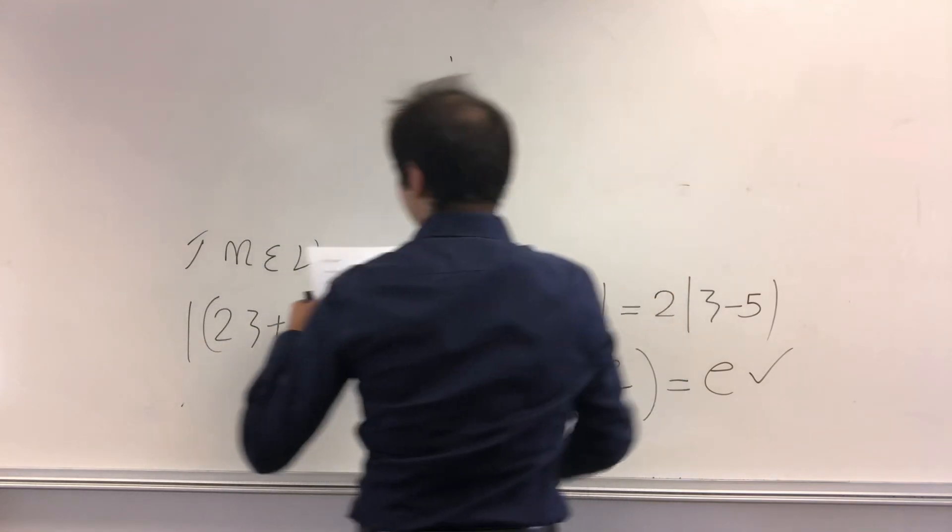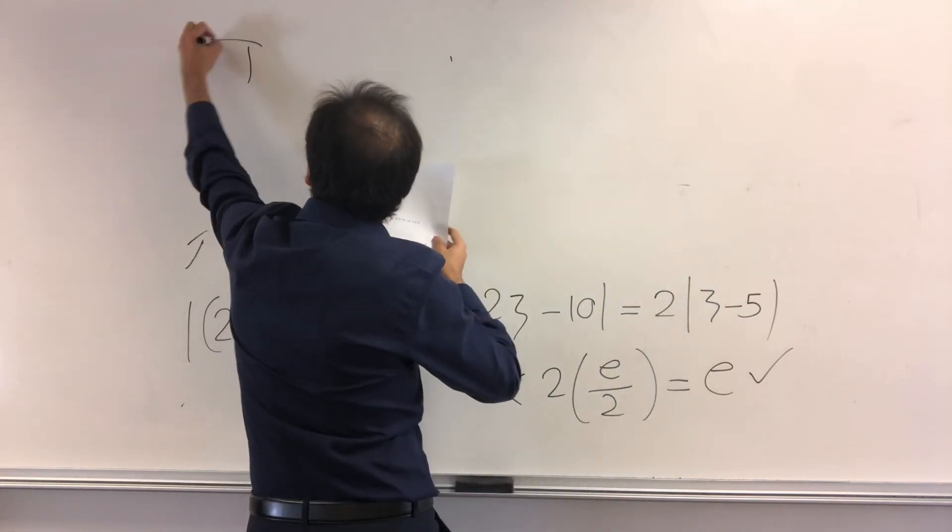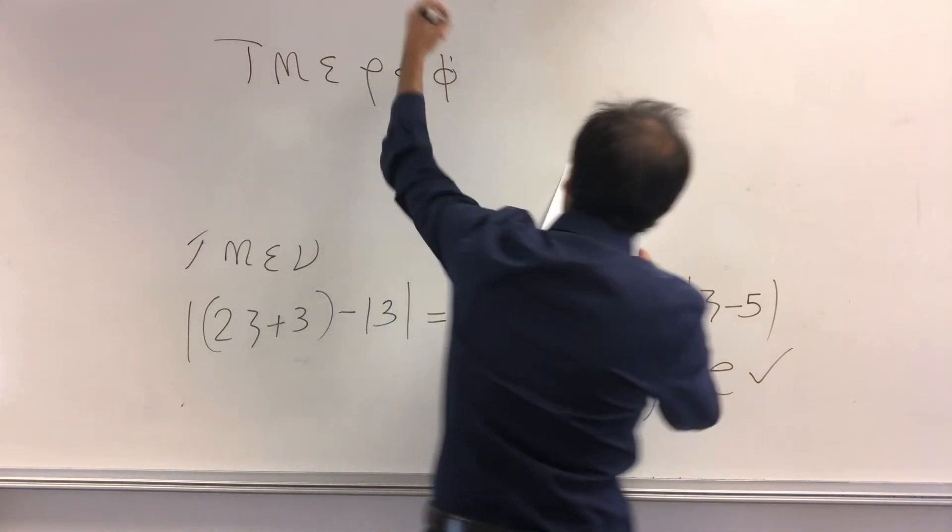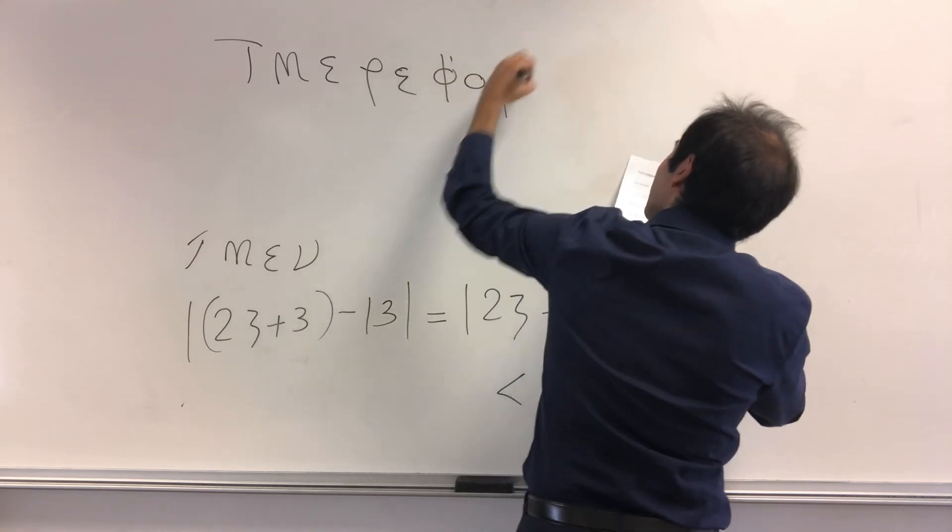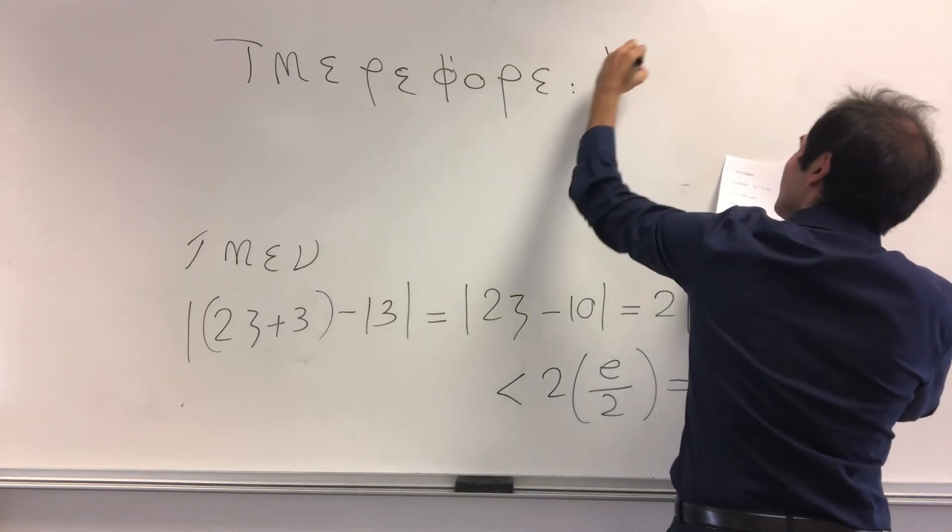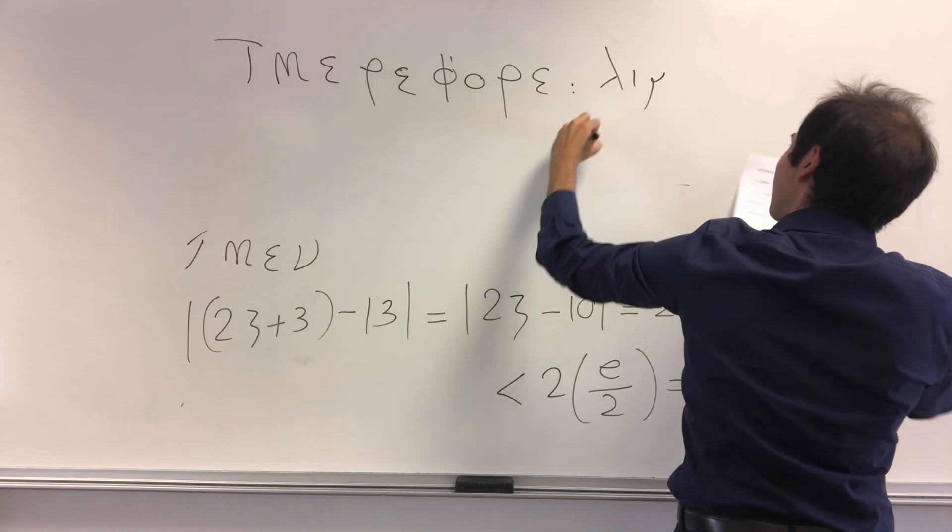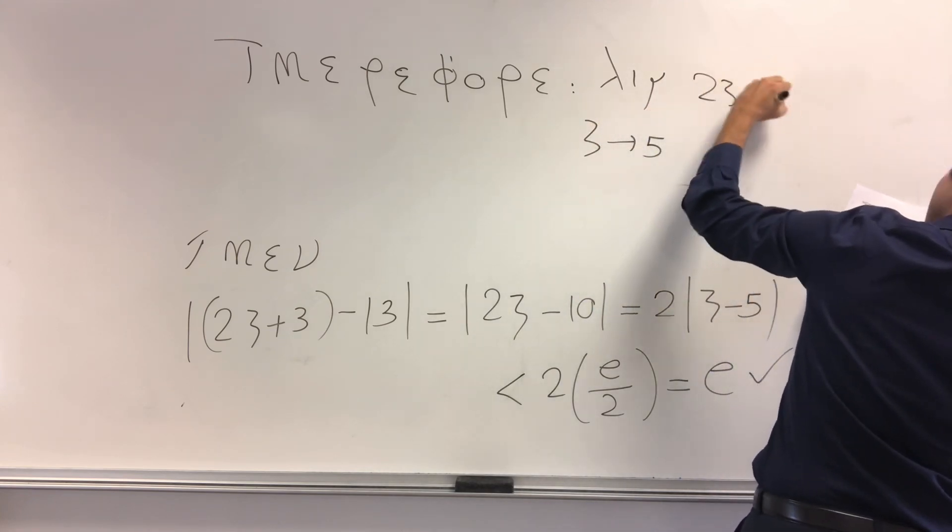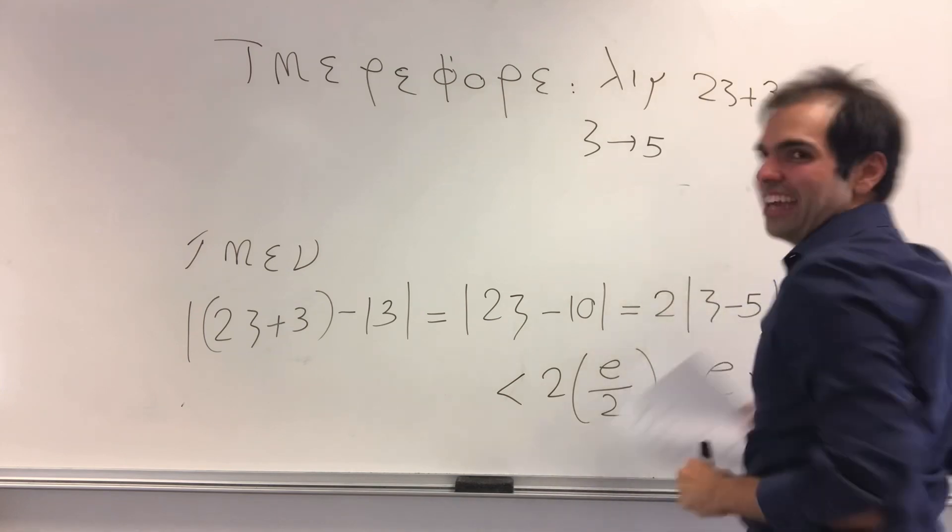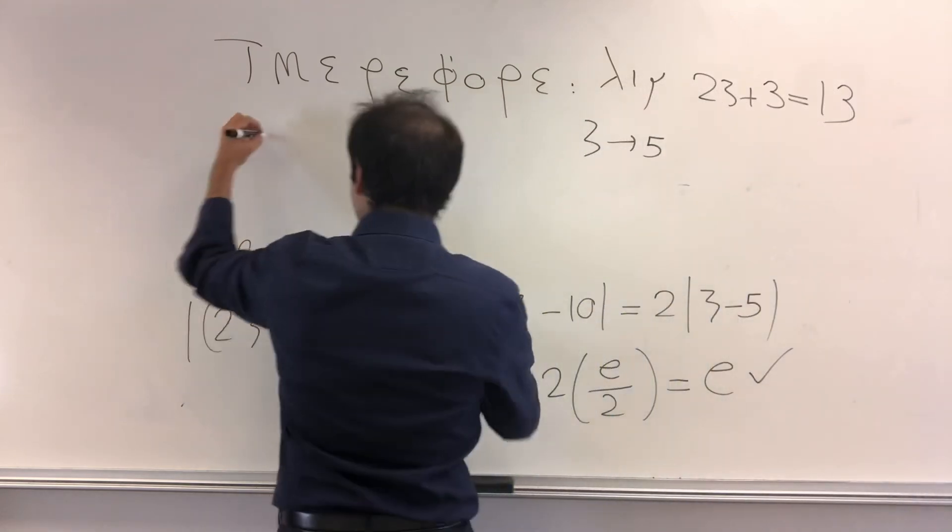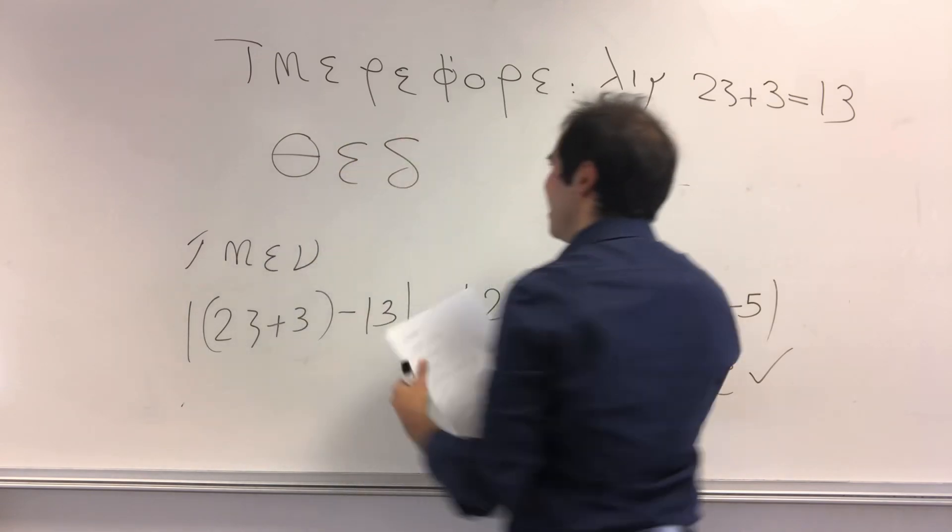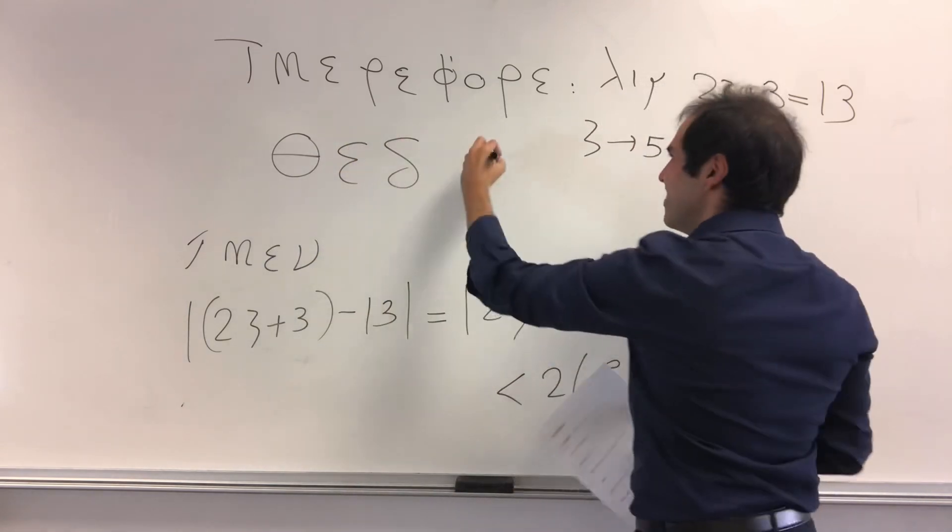Okay, and then therefore, what we have shown. So therefore, the writing is harder than the math. Therefore, what have we shown? We've shown rigorously the limit as x goes to 5 of 2x plus 3 equals 13. And then we're done, so we write QED, or theta epsilon delta. Epsilon delta, how cool is that?